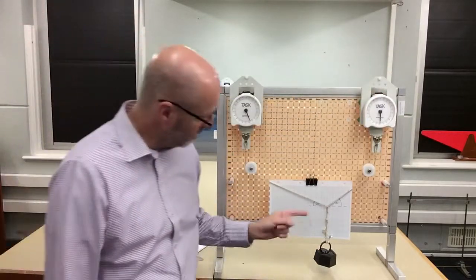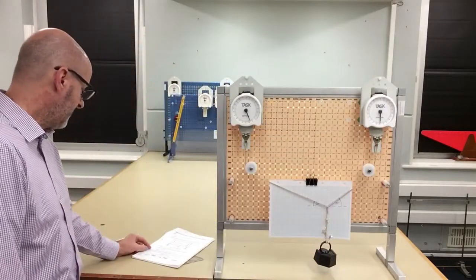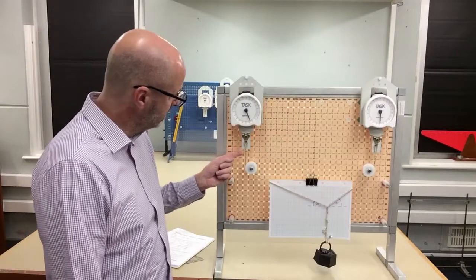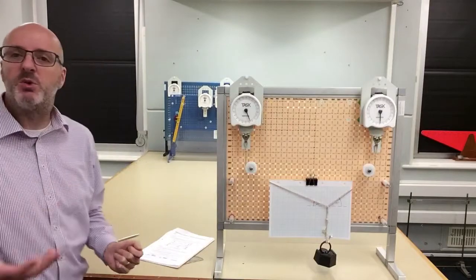Step 3: suspend a one kilogram mass from the system. Step 4: ensure the string is correctly routed around these two pulleys here. I've already done that. So we're up to step 5, and this is where you guys start your work.